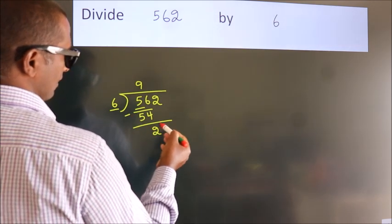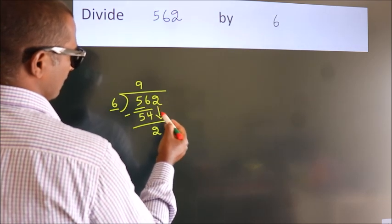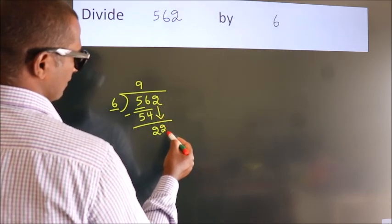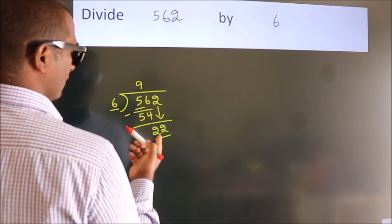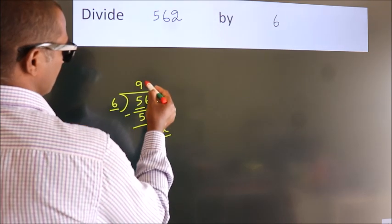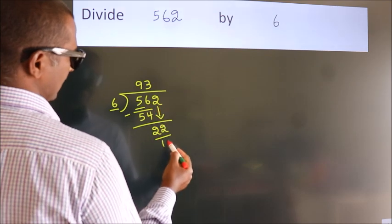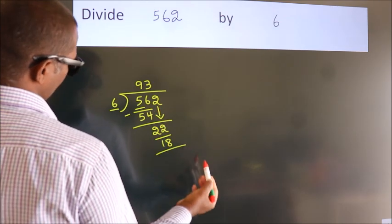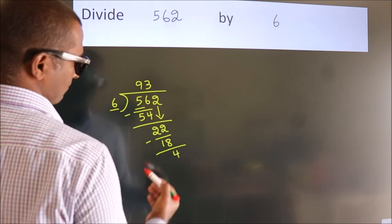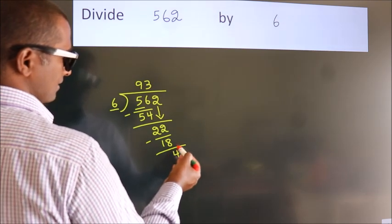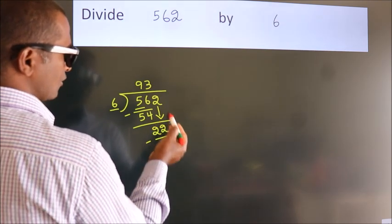After this, bring down the beside number, so 2 down, so 22. A number close to 22 in sixth table is 6 times 3 is 18. Now we subtract, we get 4. After this, no more numbers to bring it down.